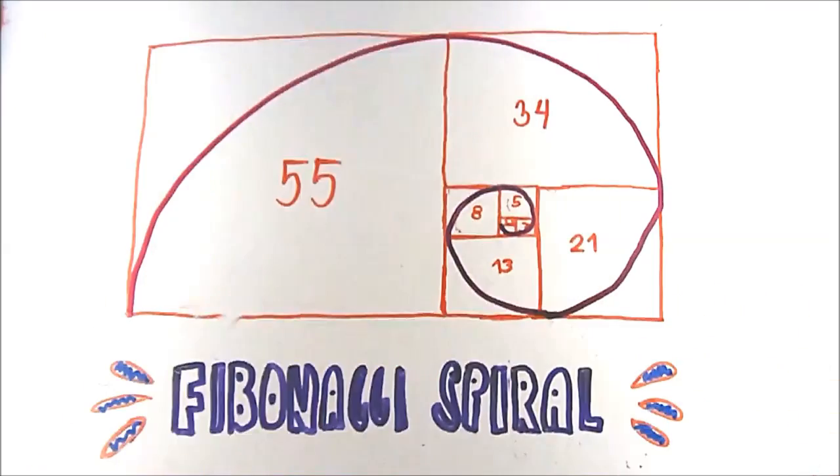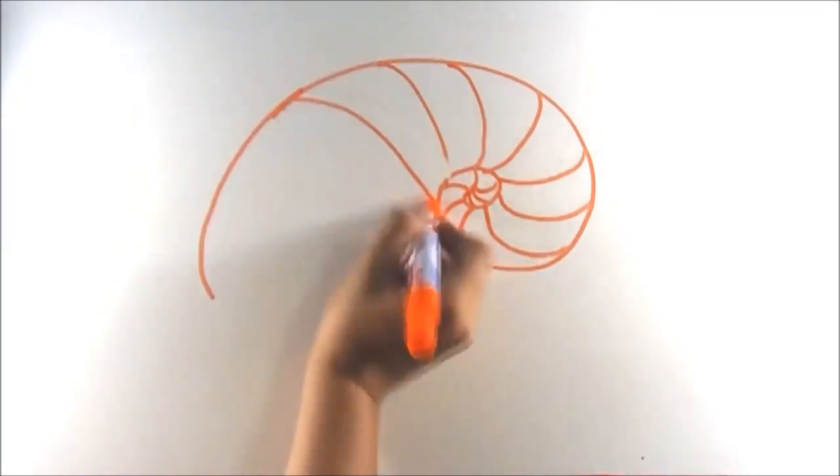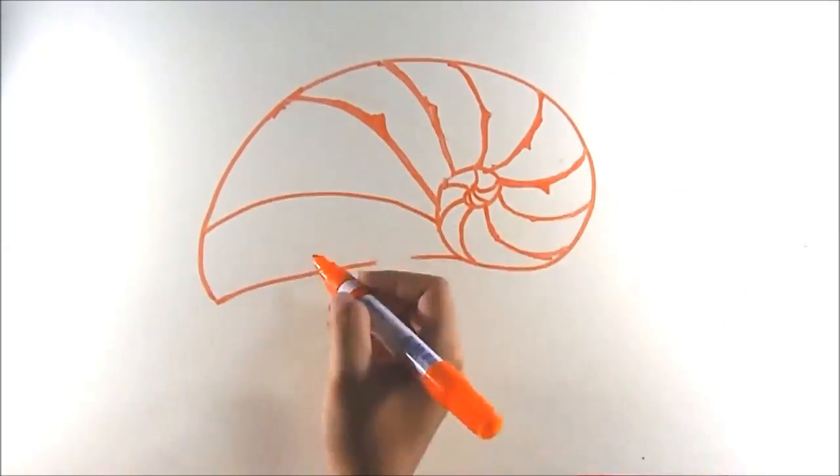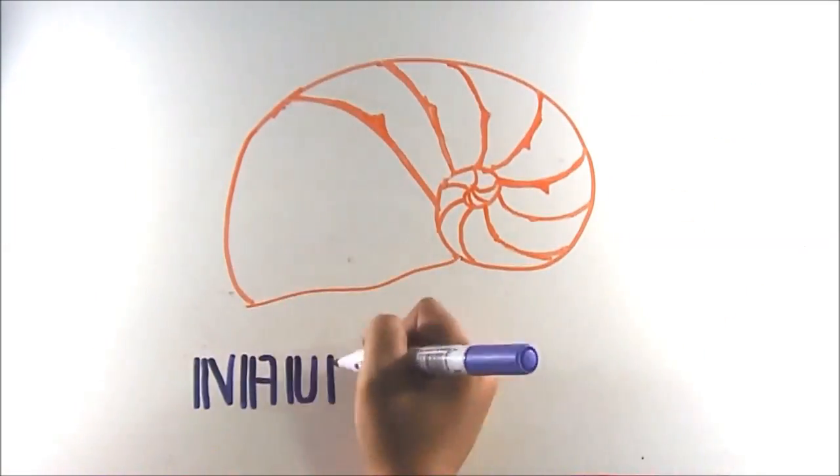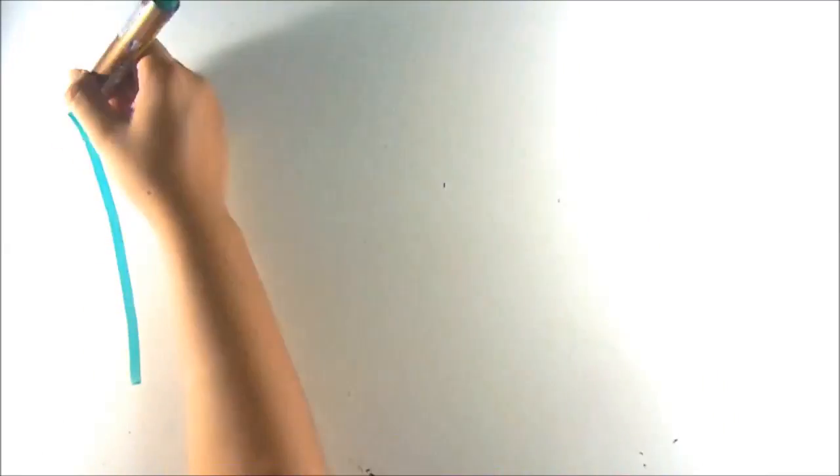The most common example of its presence is in the Nautilus shell. The Fibonacci spiral can also be seen in fern leaves, especially baby fern leaves.